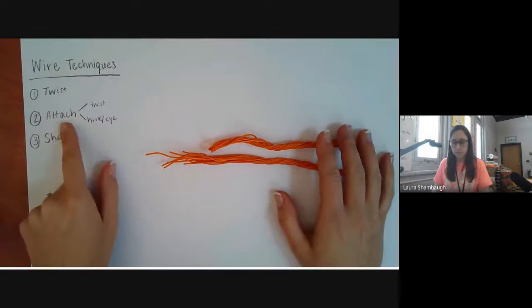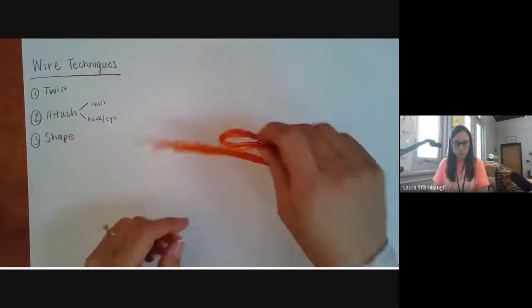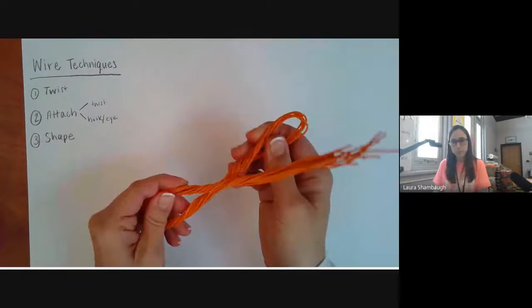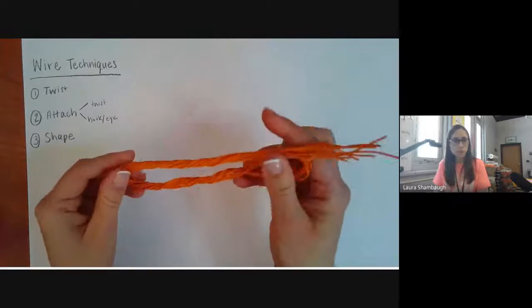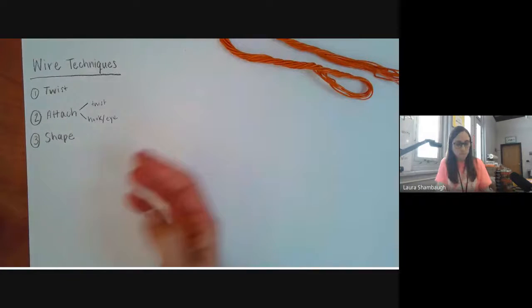We'll cover twisting the wire, two different ways to attach the wire, and then how to shape the wire. In your art kit you should have received a pack of wire that are all the same color. If you need more wire or a different color just come see me and I'll give you some.